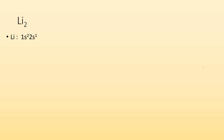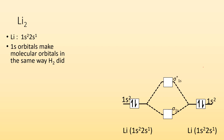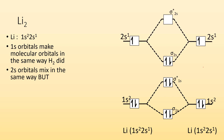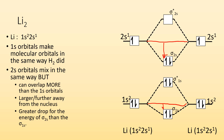Let's take a look at Li2, the lithium molecule. The electron configuration for lithium is 1s2, 2s1. The 1s orbitals make molecular orbitals in the same way that H2 did — they combine, and we end up with a bonding orbital and an anti-bonding orbital, then fill in the electrons. The 2s orbitals mix the same way. But notice there's a difference: because the 2s orbitals are larger, they can overlap more than the 1s orbitals do.